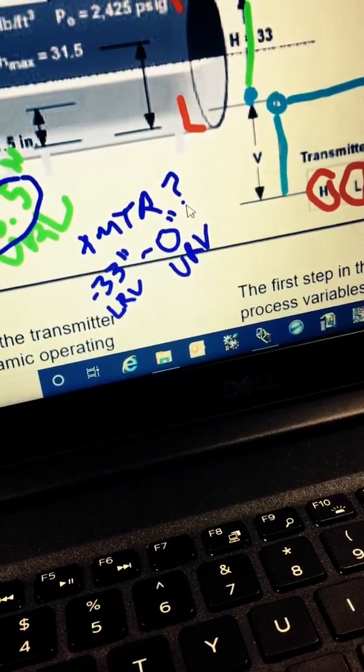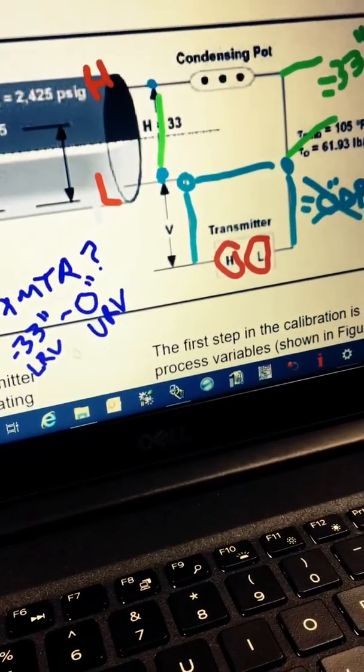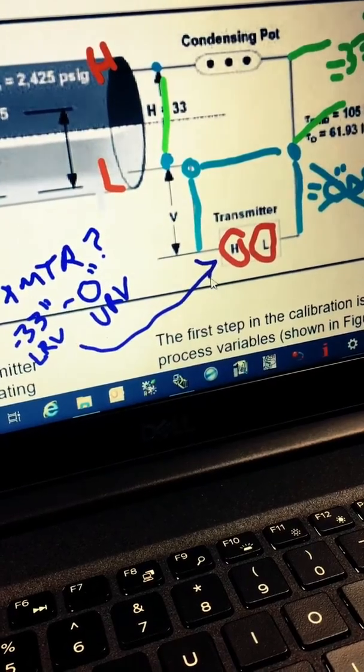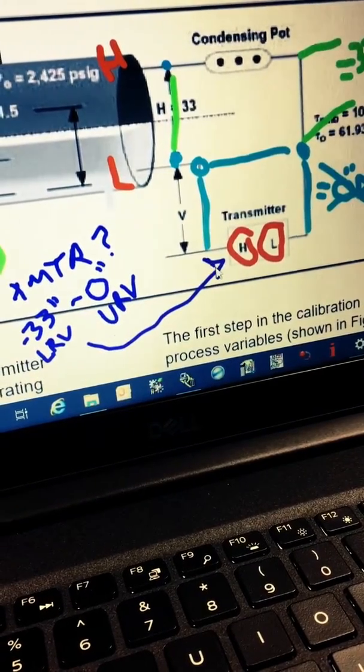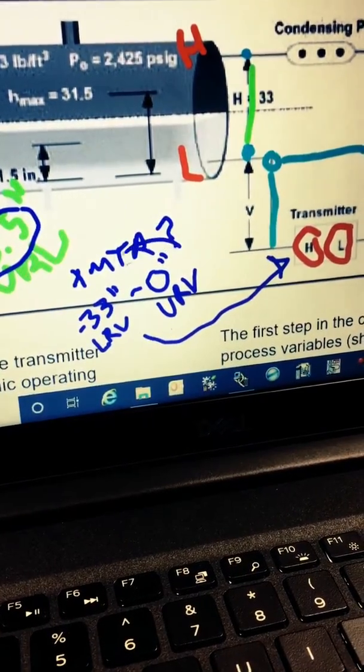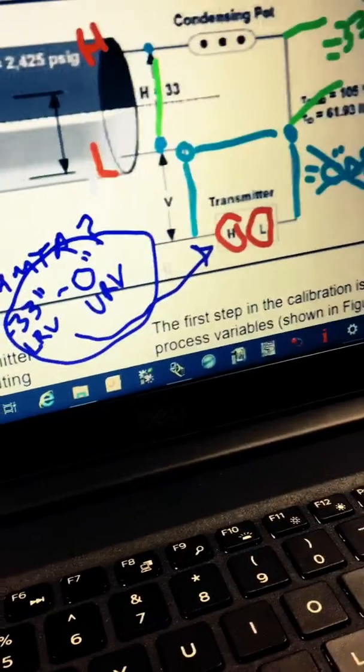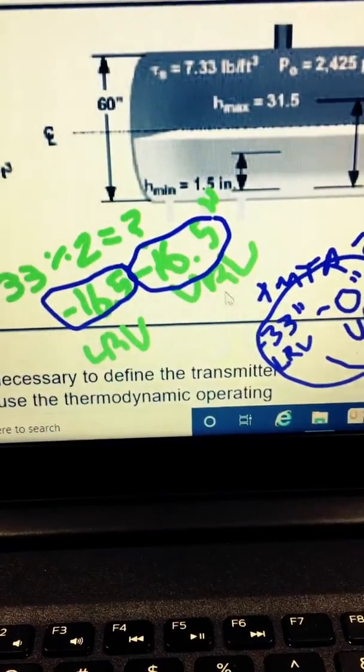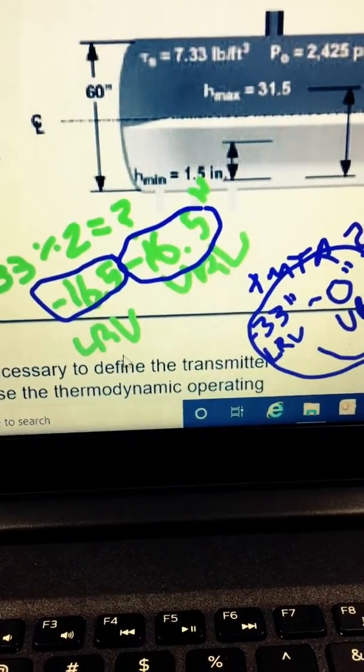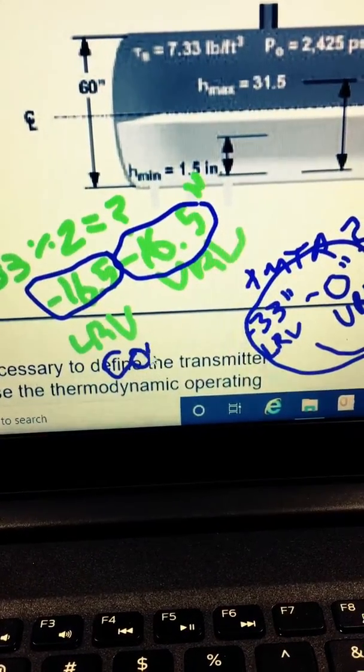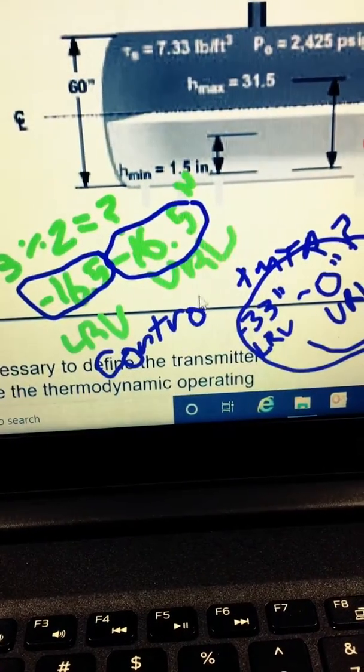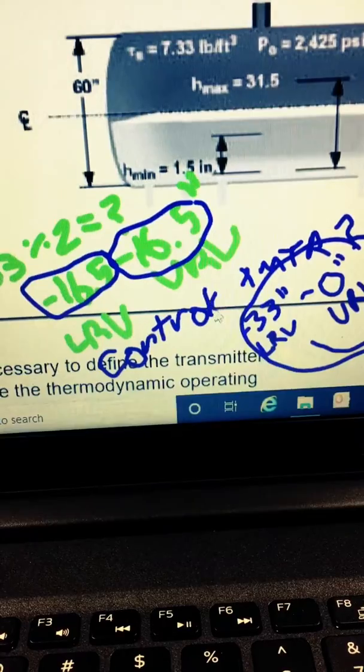Now, keep in mind, if it was tapped low to low, high to high, that would be a 33 inch lower range value and a zero inch upper range value. But because we tubed it low to high, high to low, it's going to be a negative 33 inch LRV with a zero inch URV. And we're going to have a control range of negative 16 and a half inches to plus 16 and a half inches.